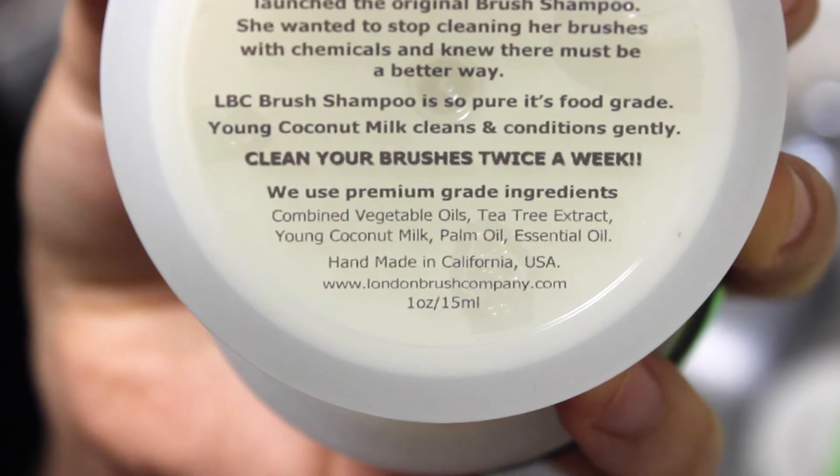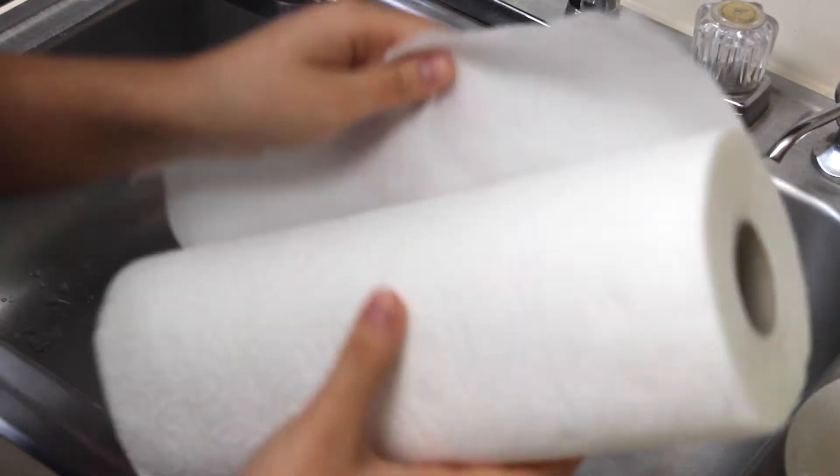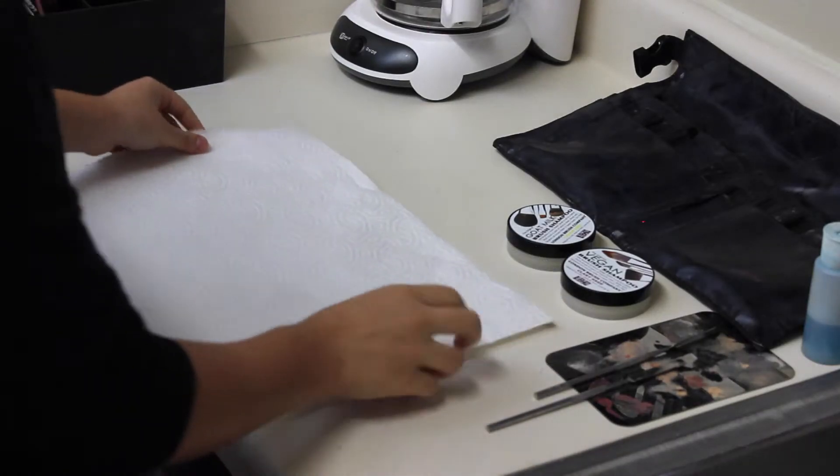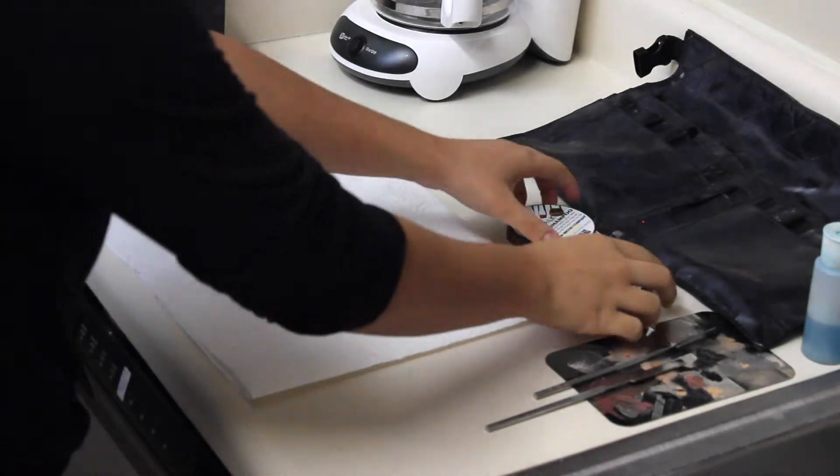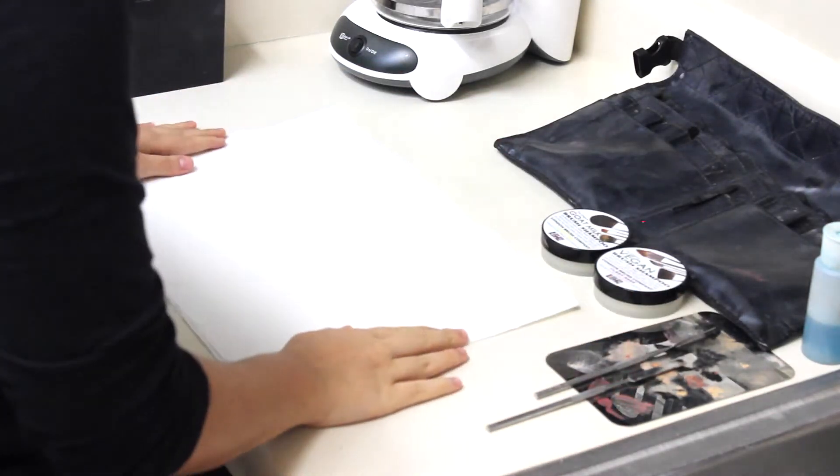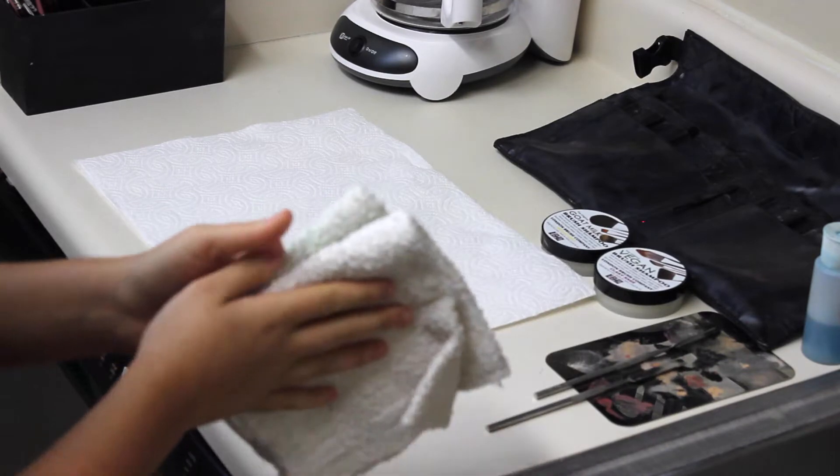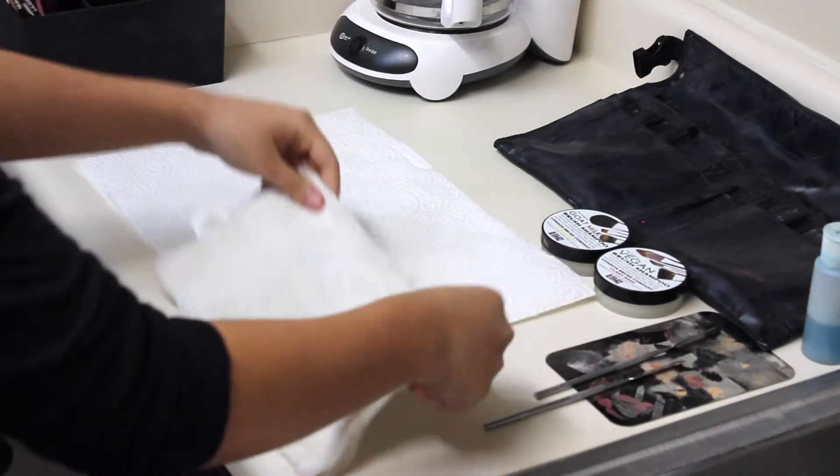So I'm taking some paper towels and I'm taking about four rectangles and I'm going to be folding that in half and then folding that half again to making one complete rectangle and setting that on my kitchen counter. Then I'm taking two clean towels.